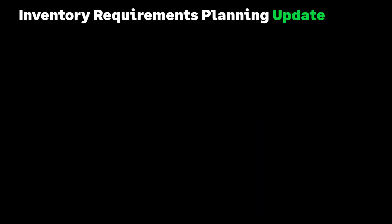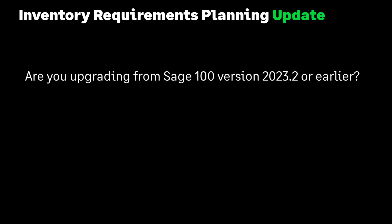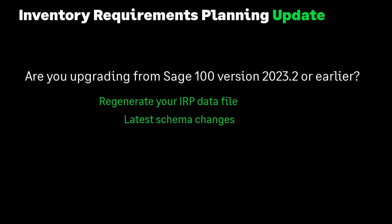One more important message for Inventory Requirement Planning users: to regenerate your IRP data, if you're upgrading from Sage 100 23.2 or earlier, you must regenerate your IRP data file to apply the latest schema changes and fixes. Improvements have been made to correctly link components back to parent items, particularly when the same sub-assembly appears on the bill of material multiple times.